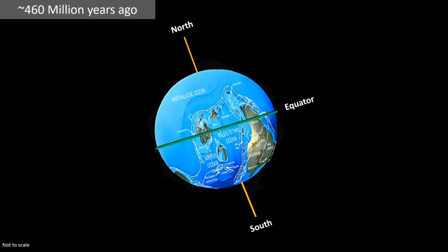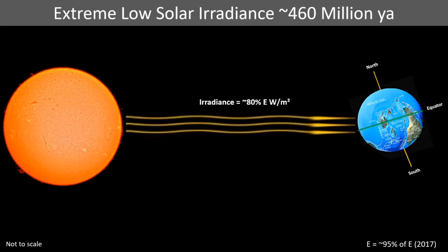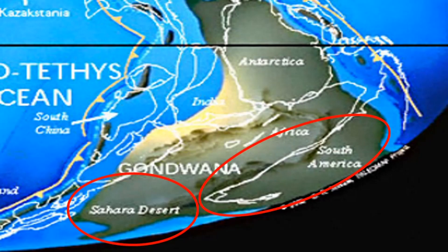So that at the inception of the Andean-Saharan Ice Age, it had moved to that area most sheltered from the sun, and that is the exact area where the ice sheet formed. The ice sheet covered what is now the Sahara and what is now the Andes of South America, hence its name.